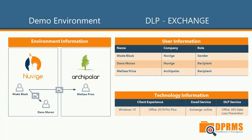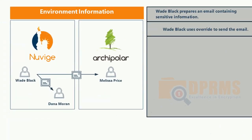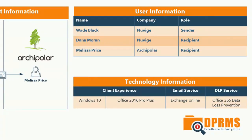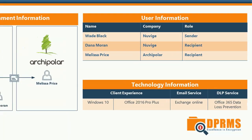In our first scenario, we will demonstrate how DLP works with Microsoft Exchange. We have prepared two companies: Nuveige and Archipolar. Wade Black will send two documents to Dana Moran, who works in the same company, and Melissa Price, who works in Archipolar. One of the documents contains sensitive customer details and the organization does not allow sensitive information to be sent to external users unless there is a business justification. The technologies used are Windows 10, Office 2016 Pro Plus, Exchange Online, and Office 365 Data Loss Prevention.